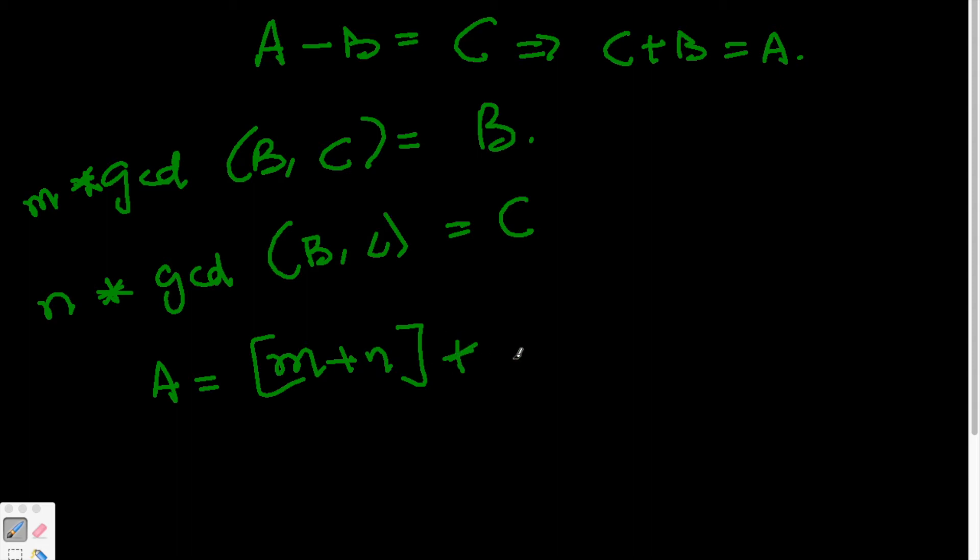Which tells us A equals B plus C, which is (m+n) times gcd(B,C), where m and n are arbitrary integers just like p and q earlier.